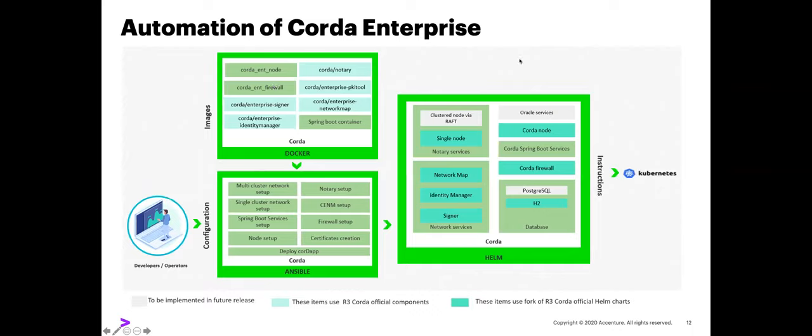Next we talk about Corda Enterprise. We started with Corda open source, going with our original principles of wanting everything to be open source and avoiding lock-in with IP and commercial licenses. But we heard from customers that when they were serious about production with Corda, they were not using open source — they were talking to R3 and getting a commercial license. So we knew we needed to provide the enterprise option as well. There are official and some non-official images from R3 that we wanted to integrate.